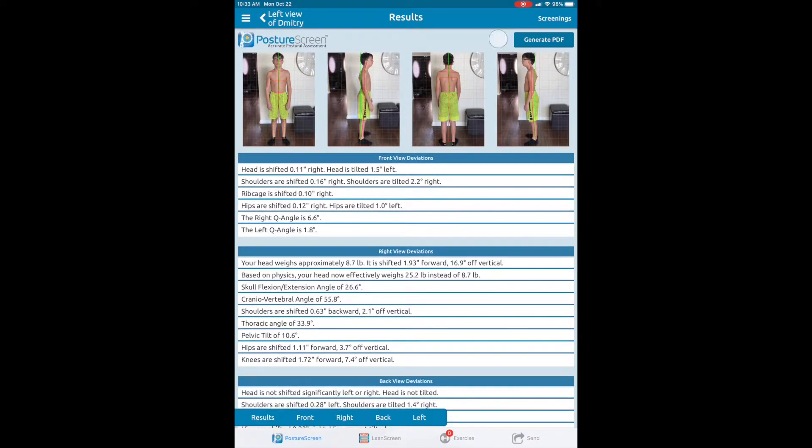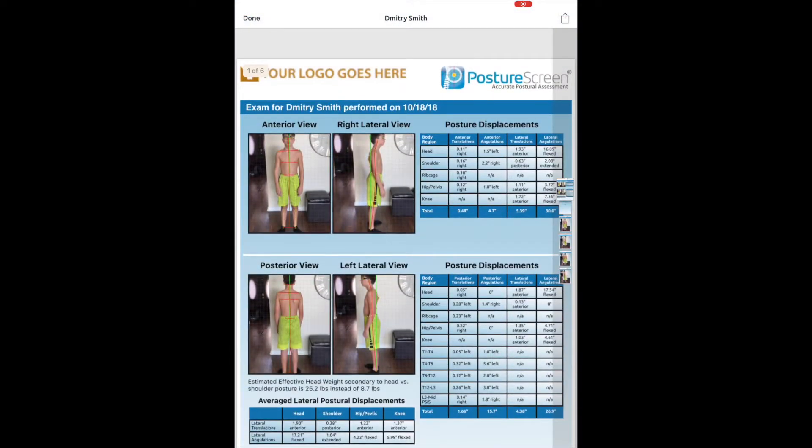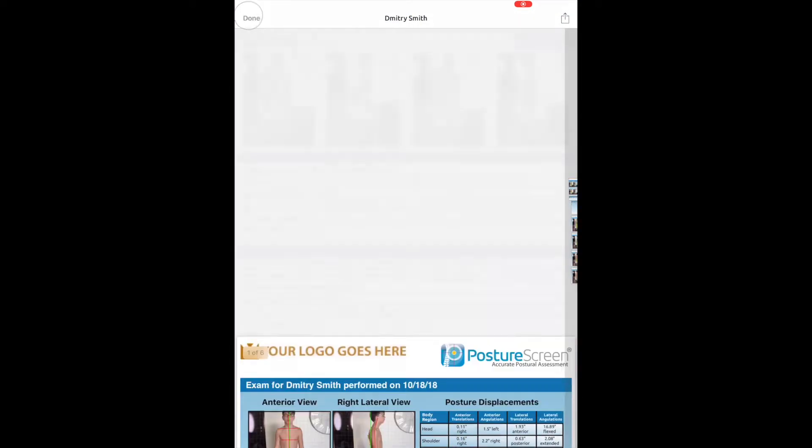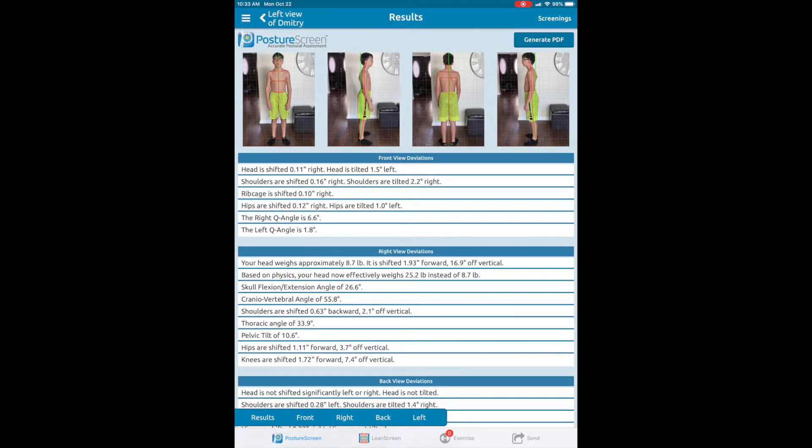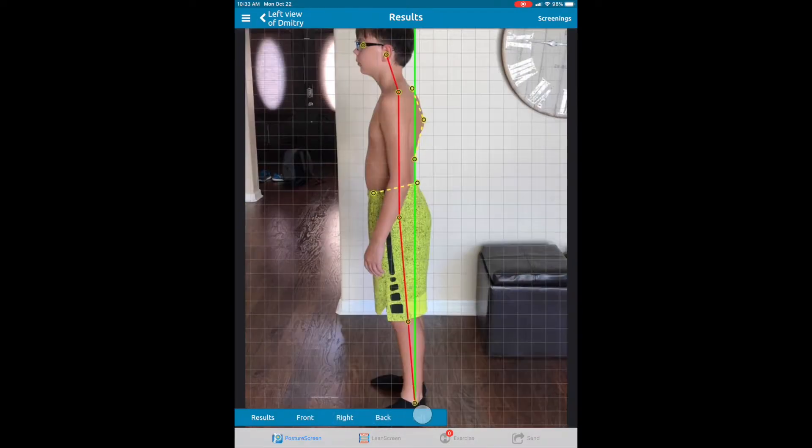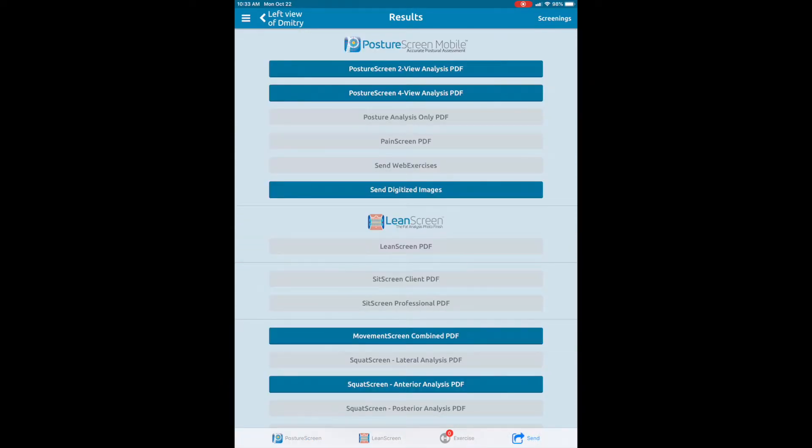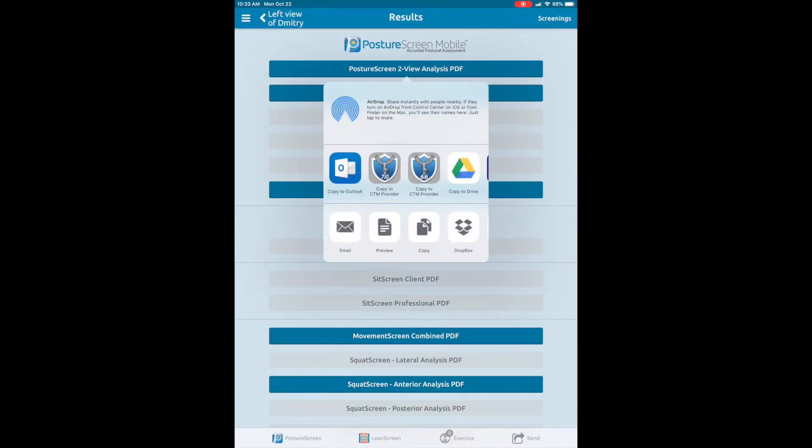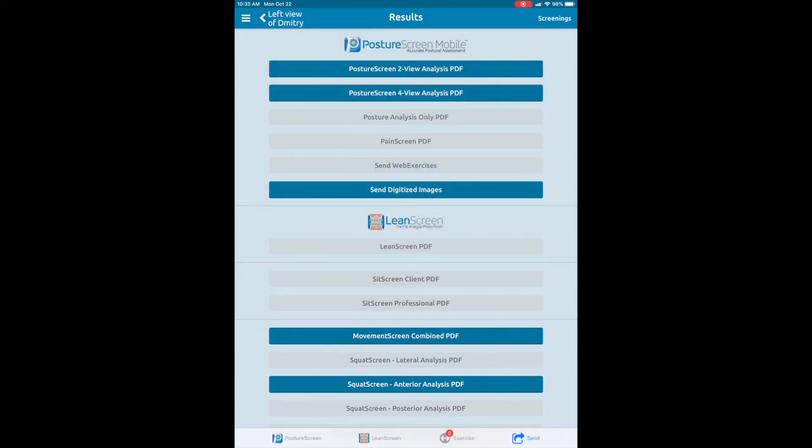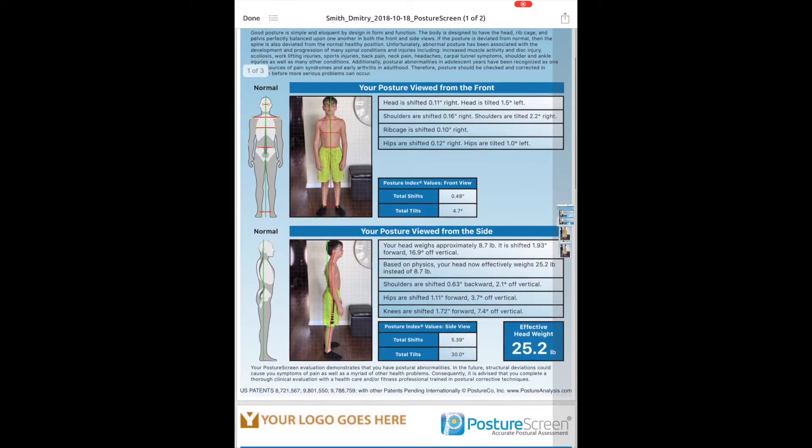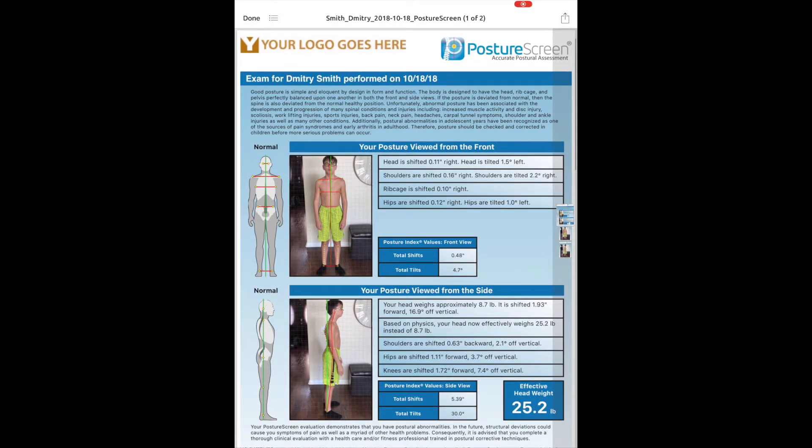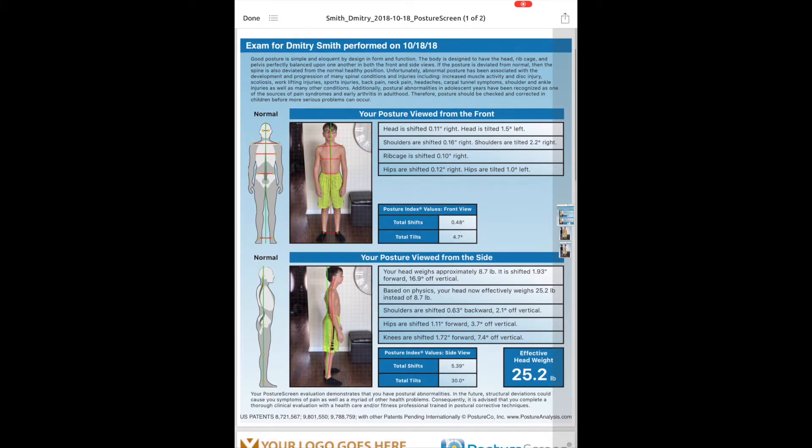Now, something to keep in mind. This generate PDF document is only for just to get a preview of the 4-view PDF document. We recommend you never really show that to the patients or clients because it's quite confusing. We recommend that you do the 2-view. So we have all 4-views here digitized. We have the results for you to be able to review with your client or patient. But if we're going to send the PDF, the one that we send to the patient would be the preview of the 2-views. That makes it a lot more simplistic for the patient or client to understand their postural deviations.